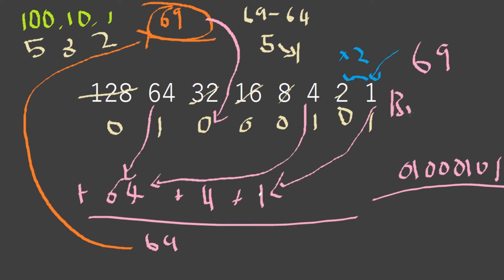Let me explain it again one more time. Can 128 go into 69? It cannot go into 69. Can 64 go into 69? Yes it can because it's smaller than 69, so we add a 1 here and then we take it away.